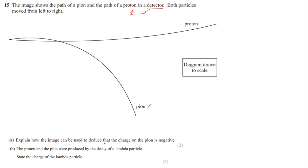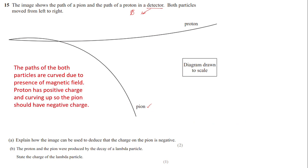So we can say the paths of both particles are curved because they are in a magnetic field. The pion curves in the opposite direction to the proton, and since the proton has a positive charge, the pion must be negatively charged.